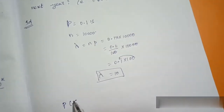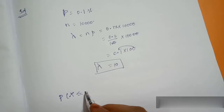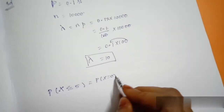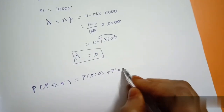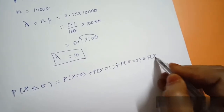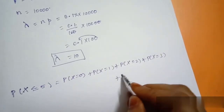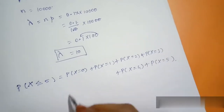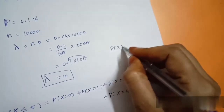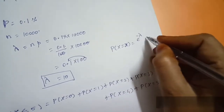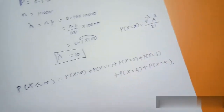Not more than 5 means X is less than or equal to 5. So P(X ≤ 5) equals P(X=0) plus P(X=1) plus P(X=2) plus P(X=3) plus P(X=4) plus P(X=5). The Poisson formula is: P(X=x) equals e to the power of minus lambda, times lambda to the power x, divided by x factorial.